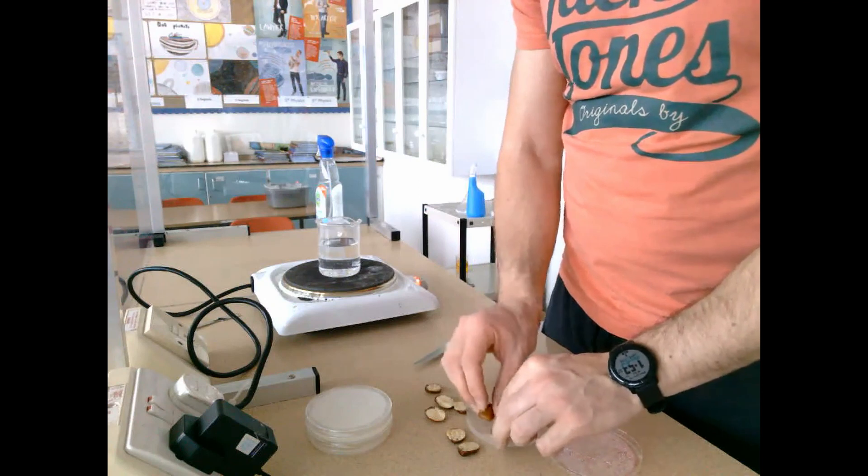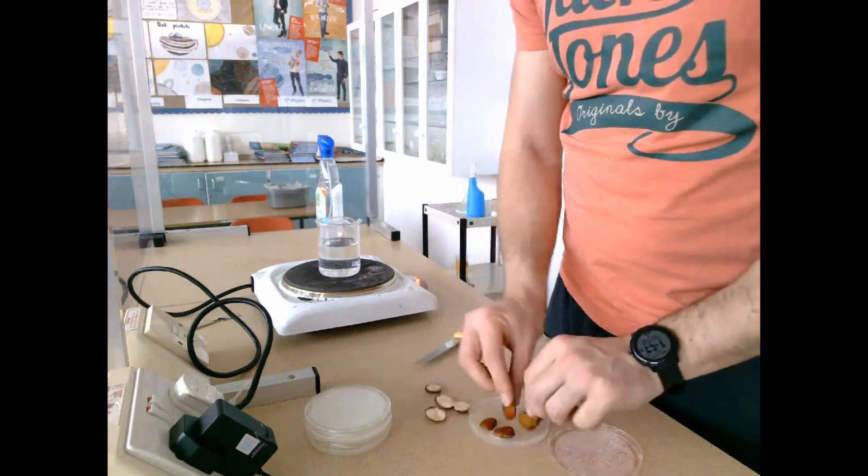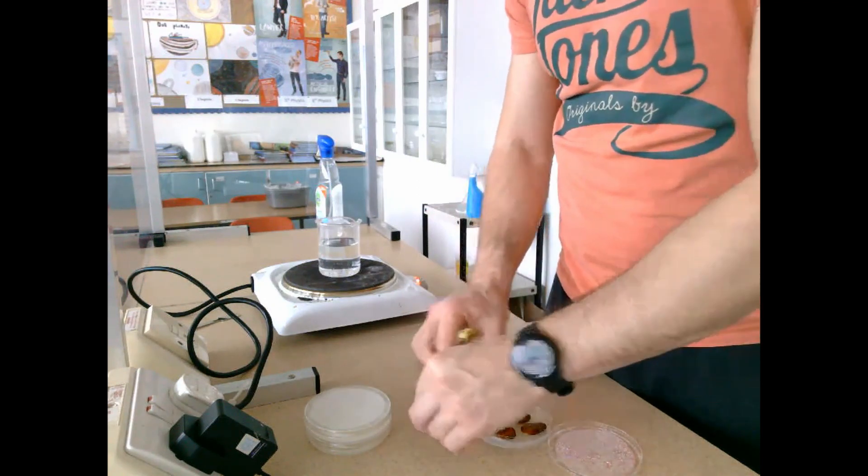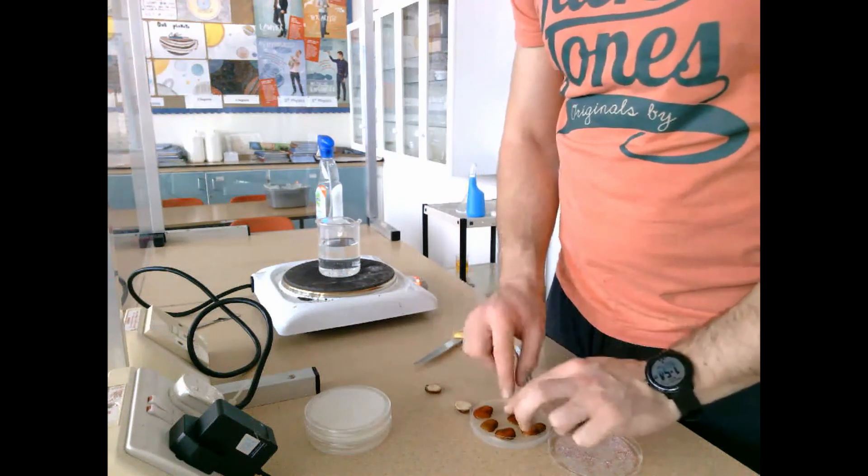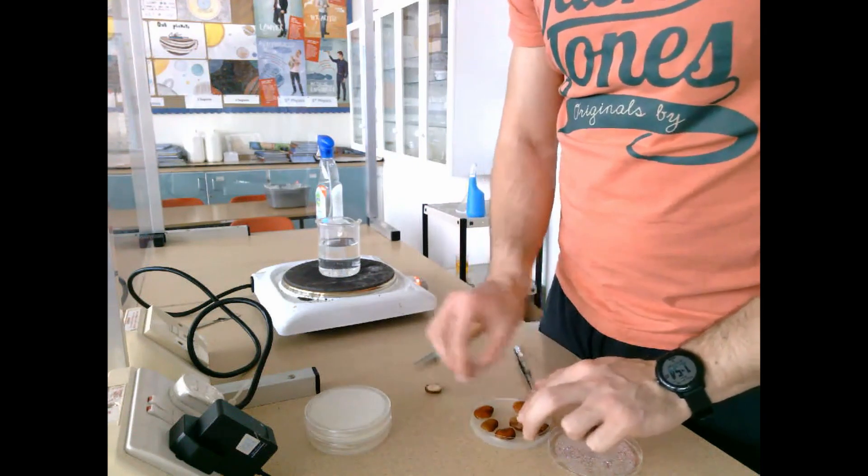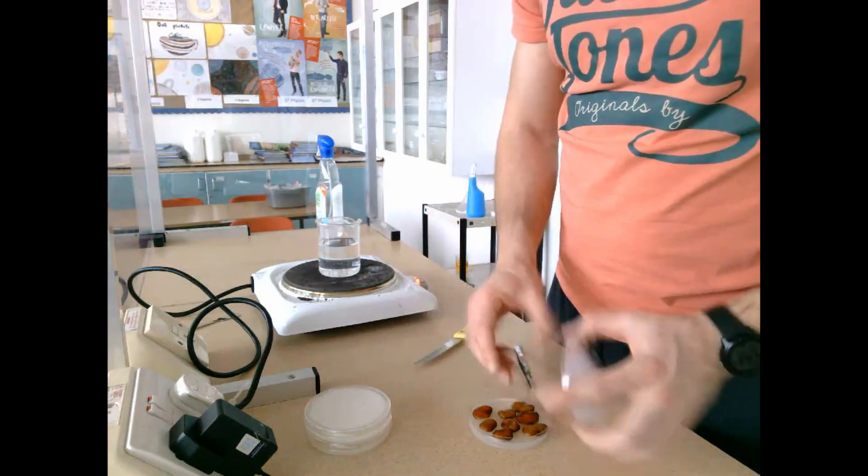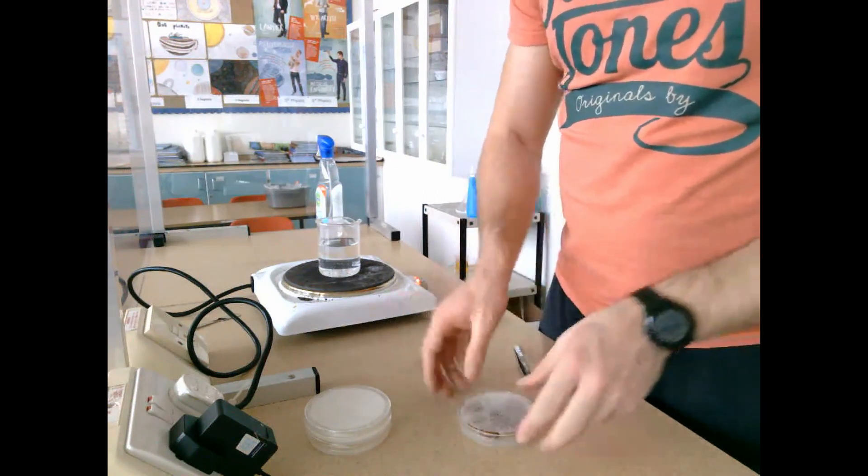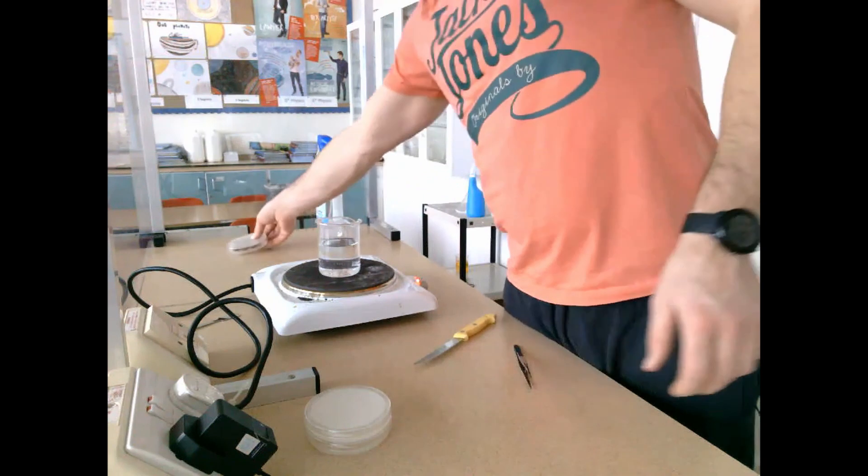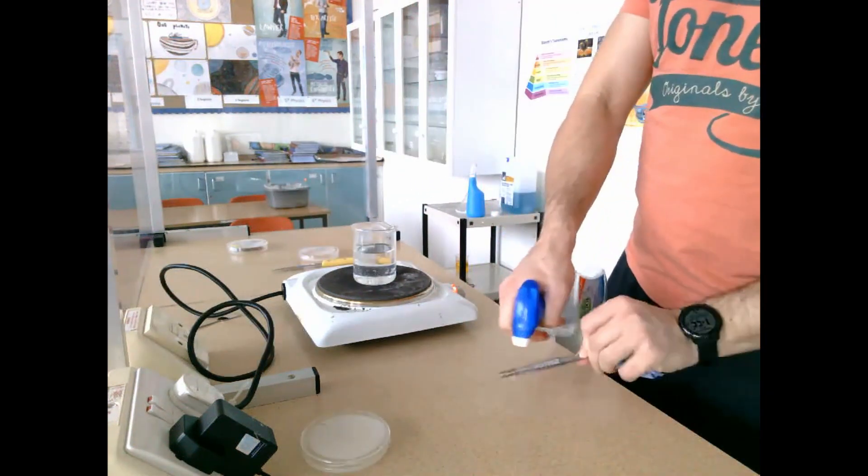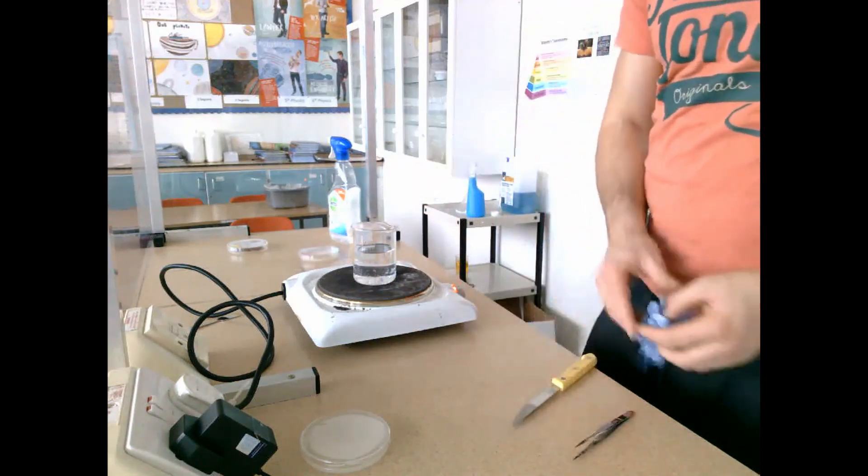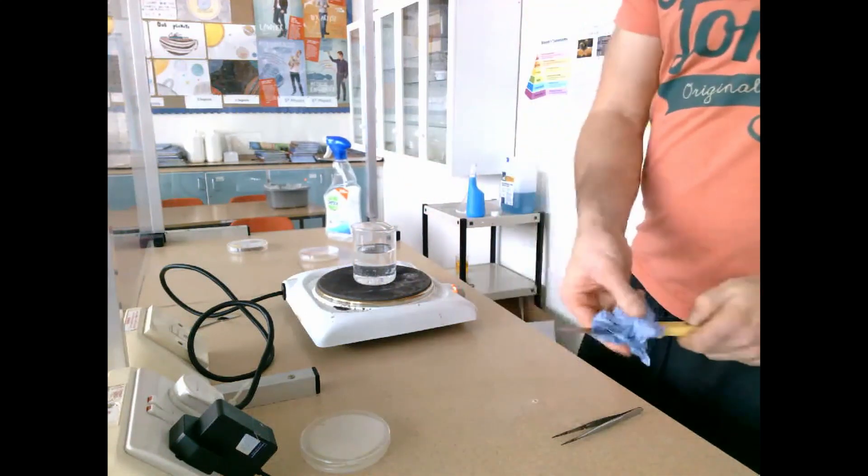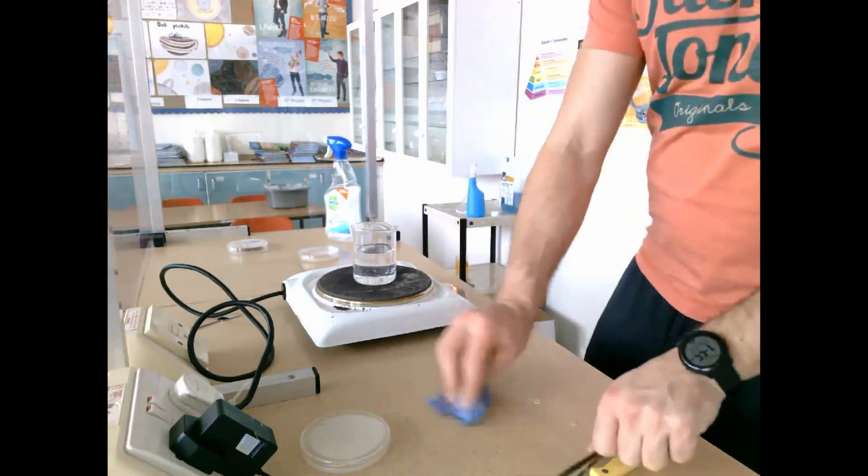Once all four seeds are done, I get my starch agar plate, take off the lid, and place the seeds face-down on the agar. This exposes the digestive enzymes of the seed to the nutrient they're going to work on—in this case, starch agar. Once all eight halves are on the agar, I close it over and place it aside to prepare for the second part.